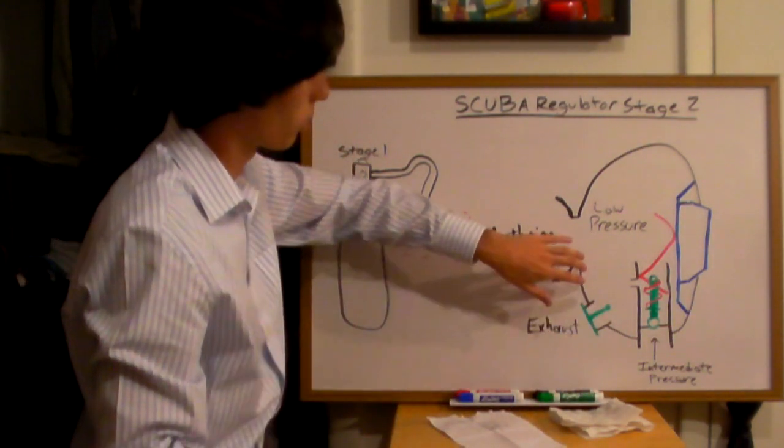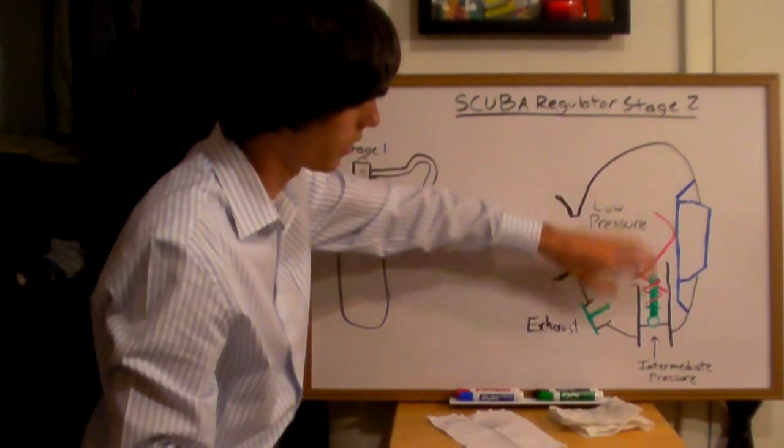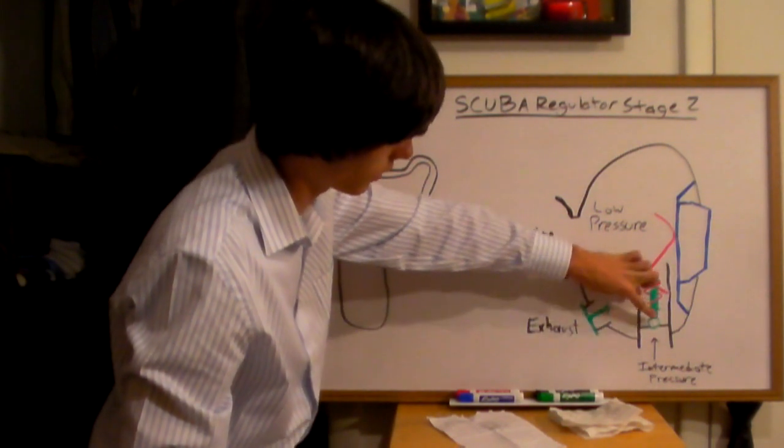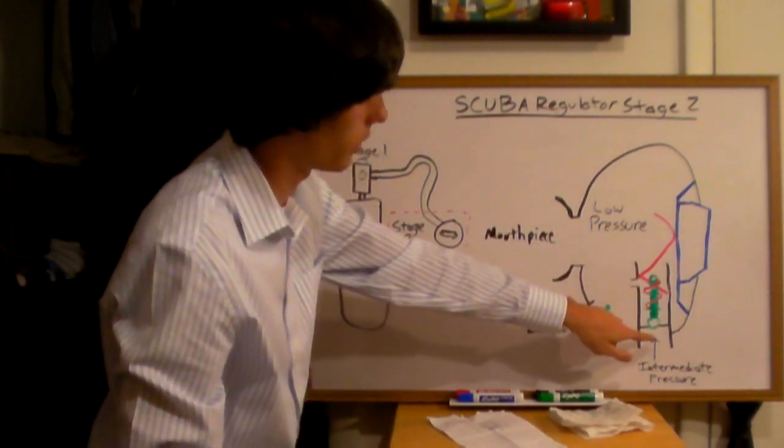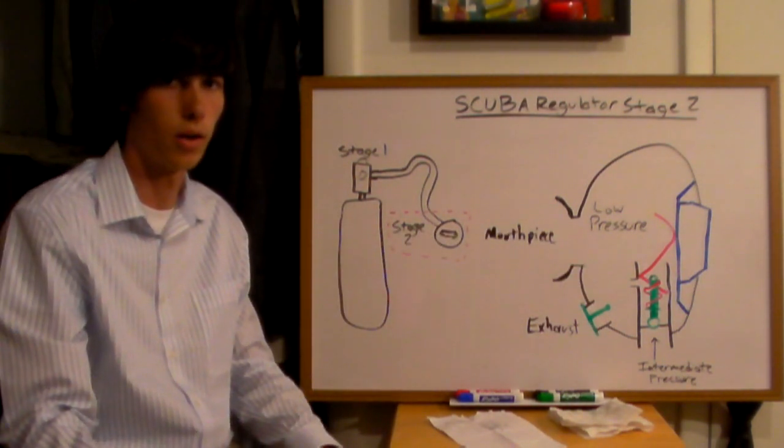The main thing you want to realize is that as you decrease the pressure in here by inhaling, it's going to pull up this little device here, which is acting as a stopper. And the intermediate pressure is going to be able to rush in. And that's how a stage 2 regulator works.